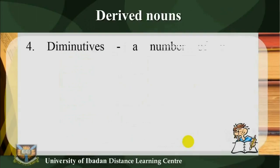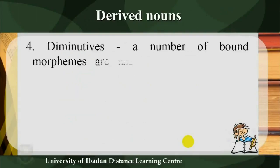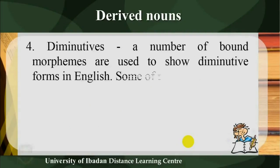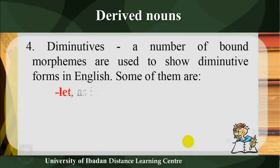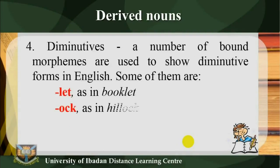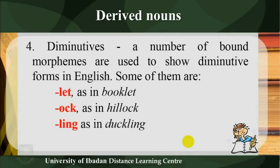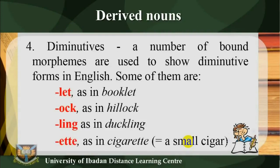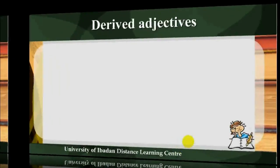4) Diminutives: A number of bound morphemes are used to show diminutive forms in English. Some of them are: -let (as in 'booklet'), -ock (as in 'hillock'), -ling (as in 'duckling'), -et (as in 'cigarette' — a small cigar).